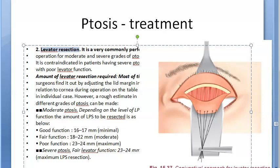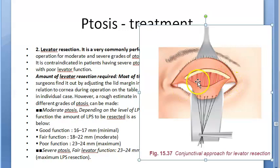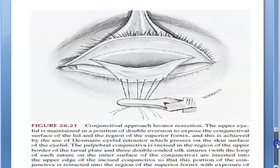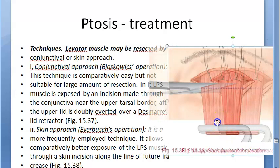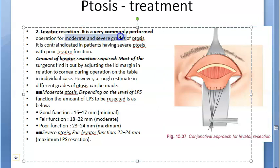For levator resection — now addressing the levator muscle — there are two approaches: conjunctival approach and skin approach. In the conjunctival approach, the eyelid is averted and the surgeon operates on the levator palpebrae superioris from the inside. In the skin approach, an incision is made on the skin surface above the eyelid to reach and resect the levator palpebrae superioris muscle. For mild ptosis only the Muller is addressed, but for moderate or severe ptosis the levator is targeted.